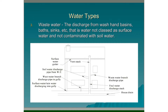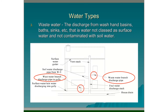Three, waste water. This is the discharge from wash hand basins, baths and sinks, etc. — that is, water not classed as surface water but also not contaminated with soil water from the toilet. We can see an example in the diagram: a pipe coming from the kitchen sink and another coming from the sink in the bathroom. This is the waste water.